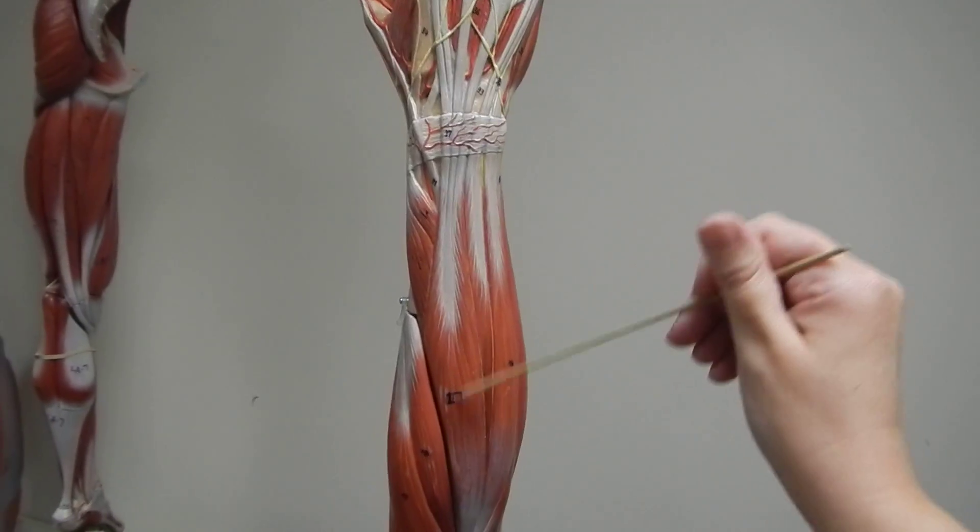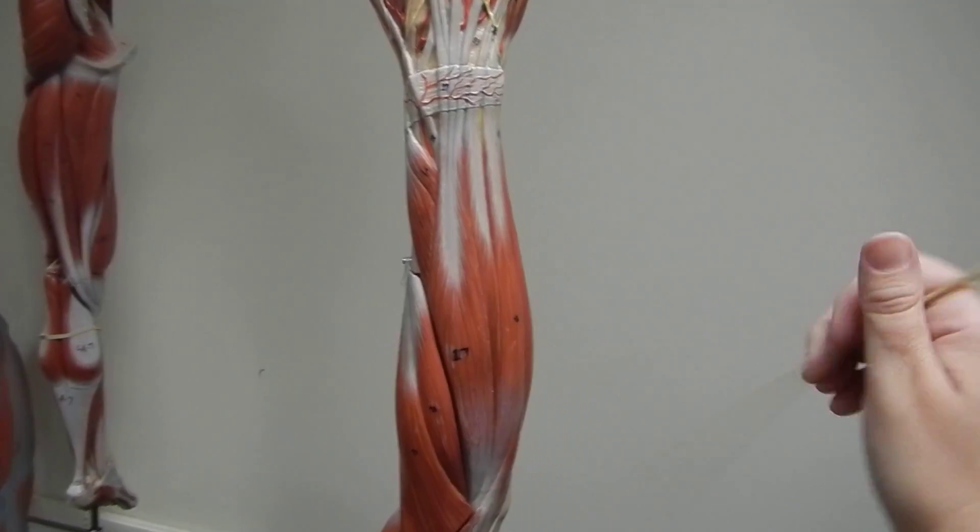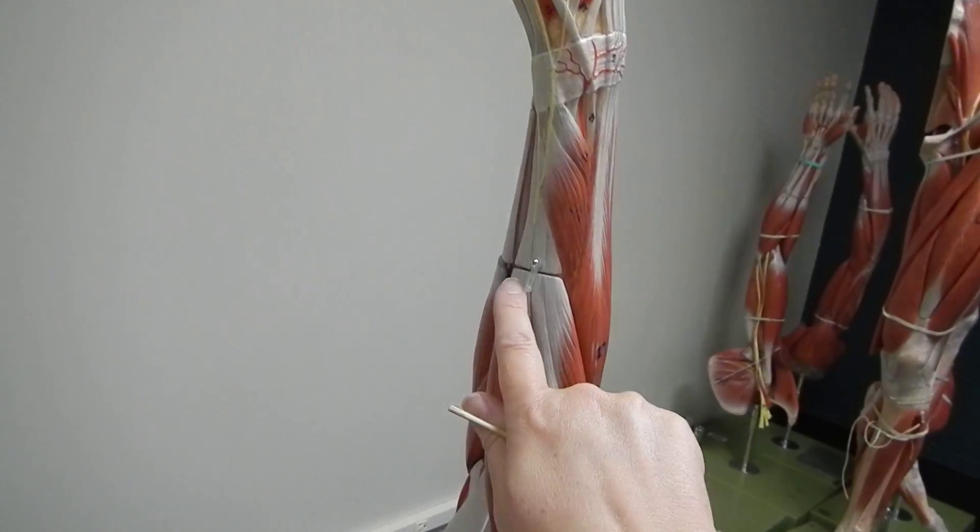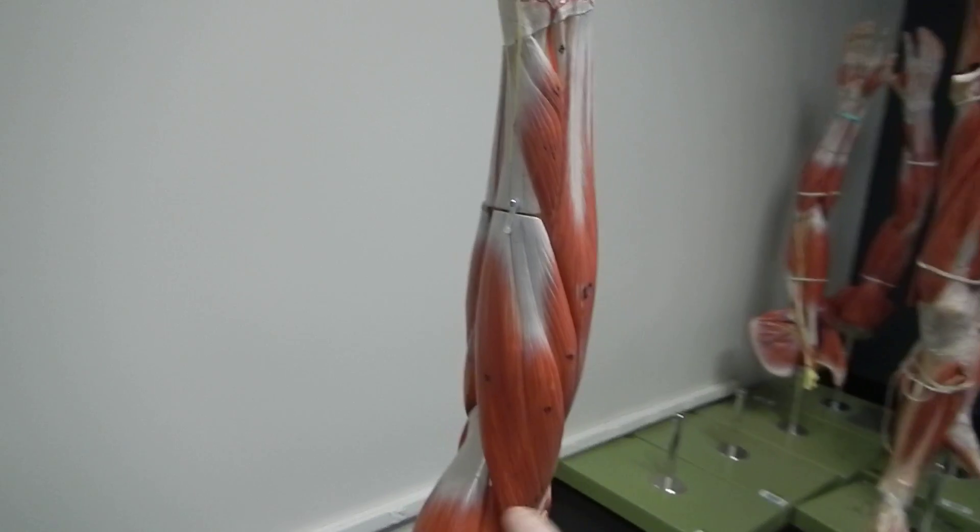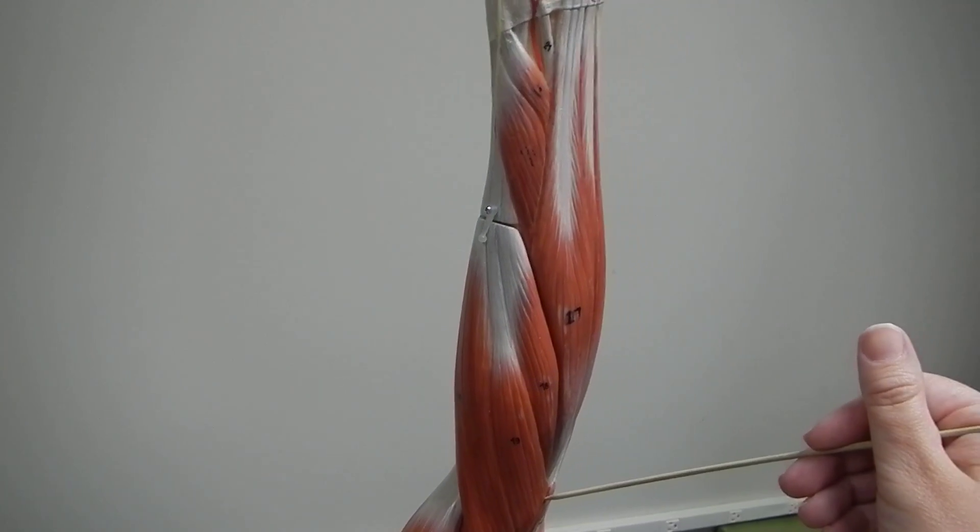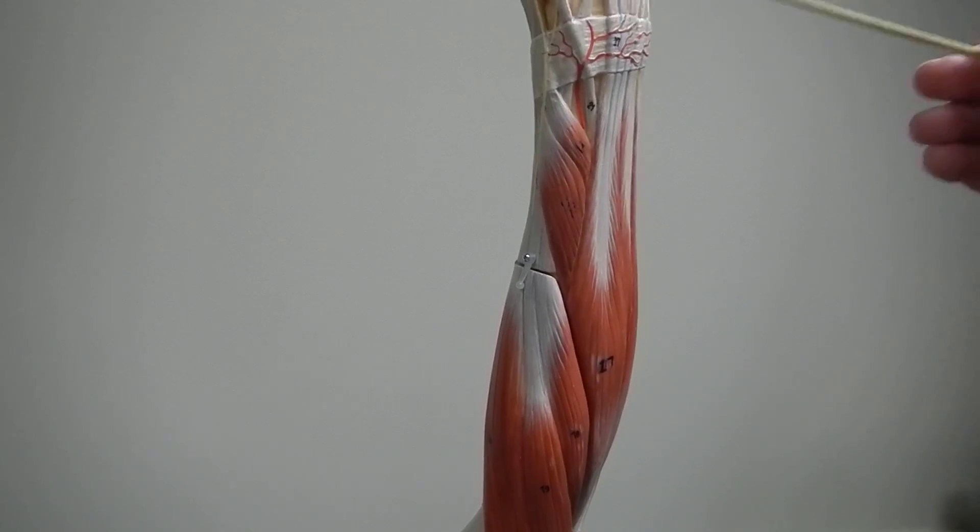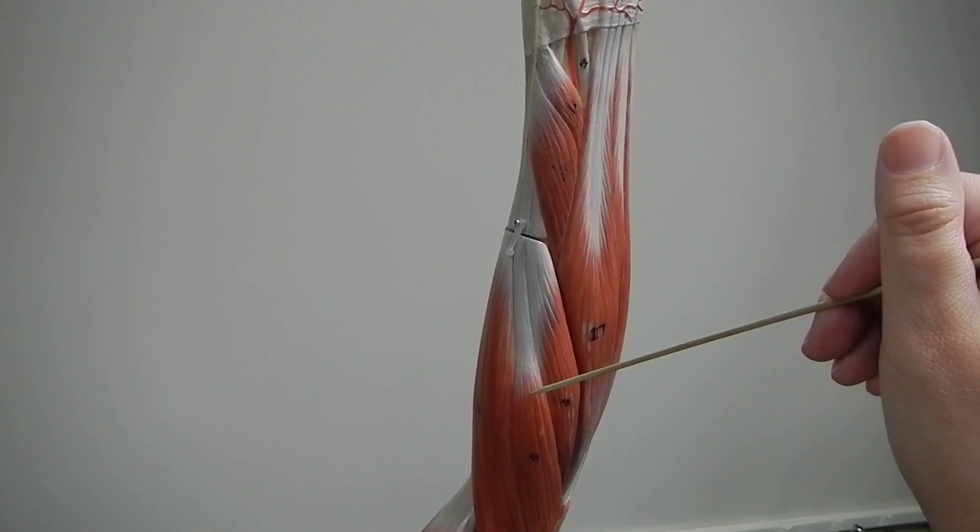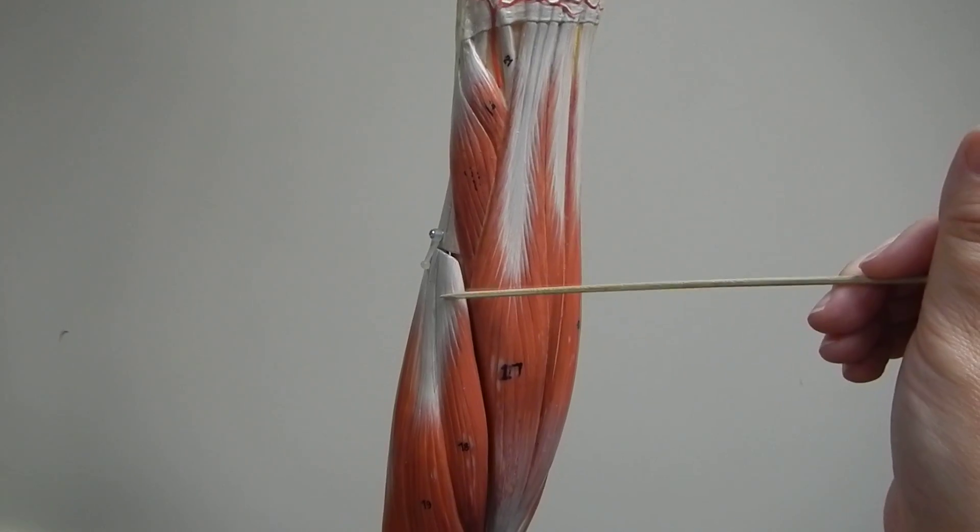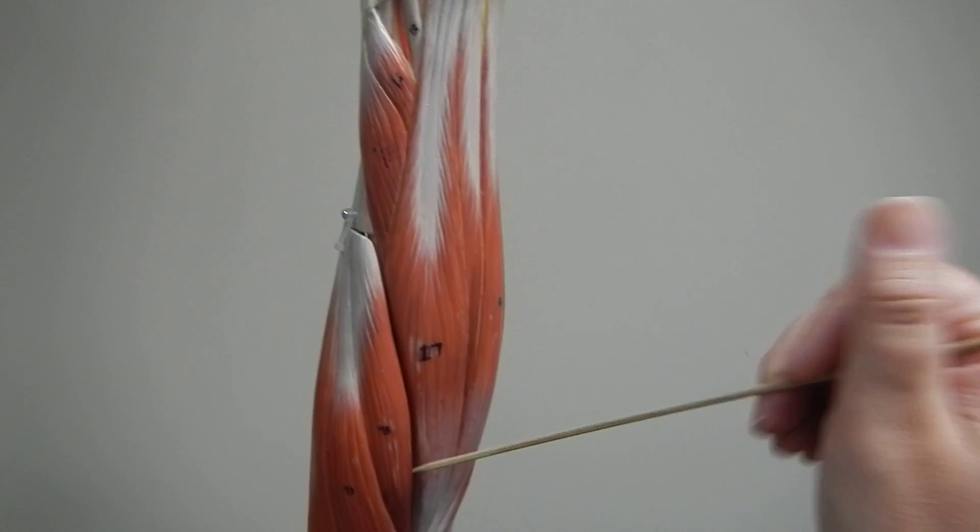So this is extensor digitorum, and then I like to group these three together. This is the brachioradialis, and then there's two right here. And so that should be the extensor carpi radialis longus, and then the one next to it is extensor carpi radialis brevis.